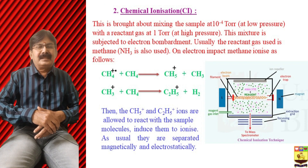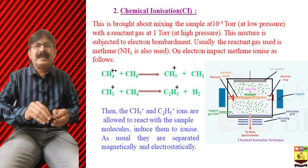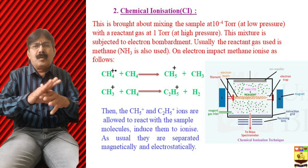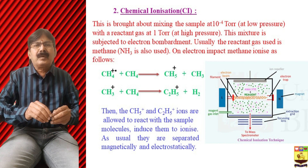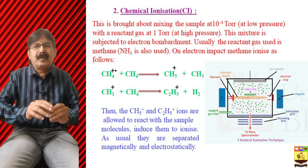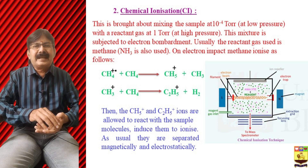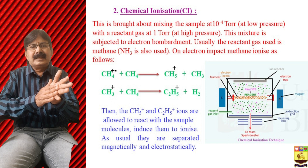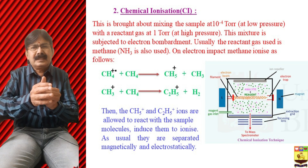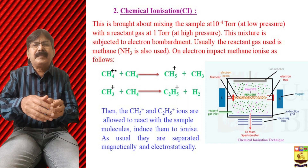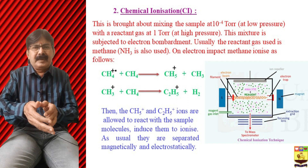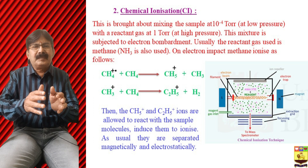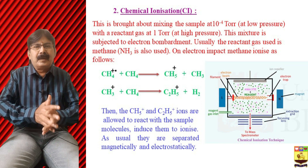The second technique is chemical ionization, which is done by chemical compounds. The sample at a low pressure of 10 to the power of minus 4 Torr is mixed with a reactant gas at 1 Torr — generally methane or ammonia — and this mixture is subjected to electron bombardment.